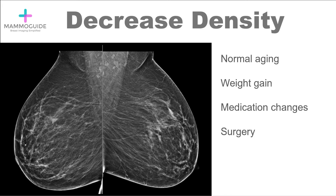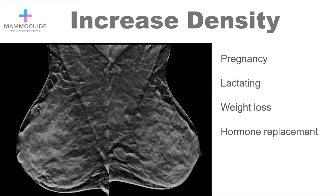Medications can also affect density. If a patient is taking hormones and then stops, that can decrease their density. Surgery is another factor — some women have a reduction mammoplasty where a large percentage of the dense fibroglandular tissue is removed, making the breast more fatty. Conversely, many things increase breast density: pregnancy or breastfeeding, weight loss — which reduces fatty tissue leaving the breast more dense — and starting hormone replacement therapy.